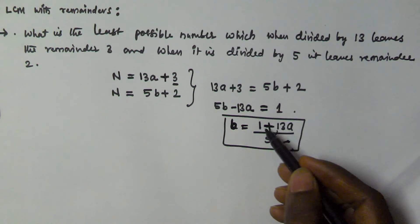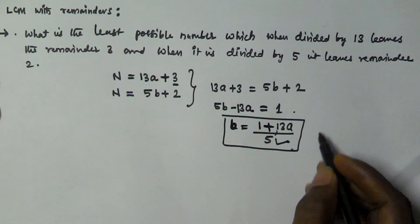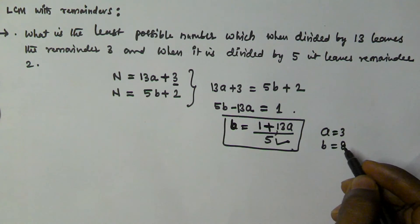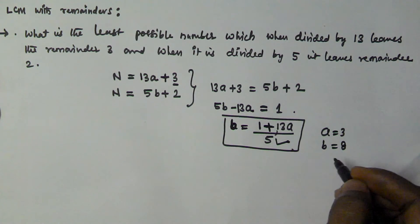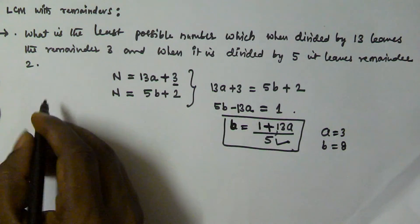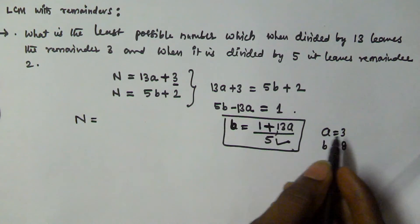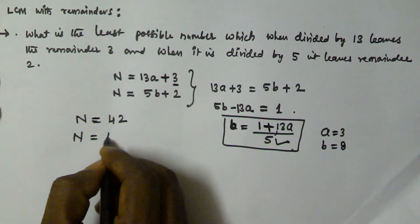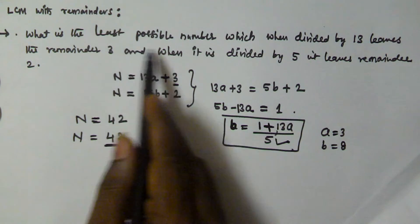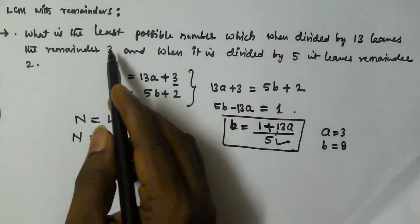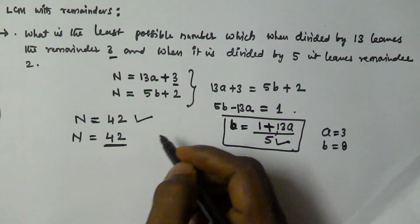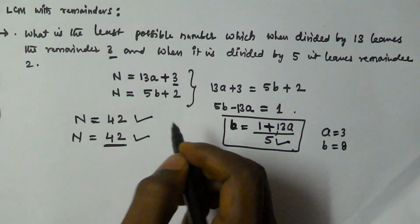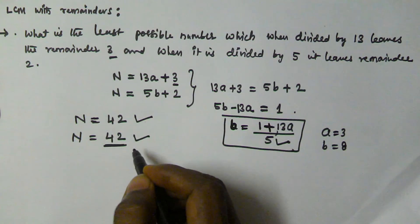For a = 3, we get 39 + 1 = 40, which is divisible by 5, giving b = 8. Substituting into both equations: n = 13(3) + 3 = 42, and n = 5(8) + 2 = 42. So the least possible number which leaves remainder 3 when divided by 13, and remainder 2 when divided by 5, is 42.